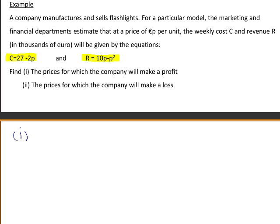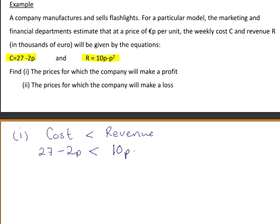For the company to make a profit, the cost of producing the flashlights should be less than the revenue received from selling the flashlights. Our cost was given by 27 minus 2p, and the revenue r is equal to 10p minus p squared. We are going to write this in the general quadratic format.